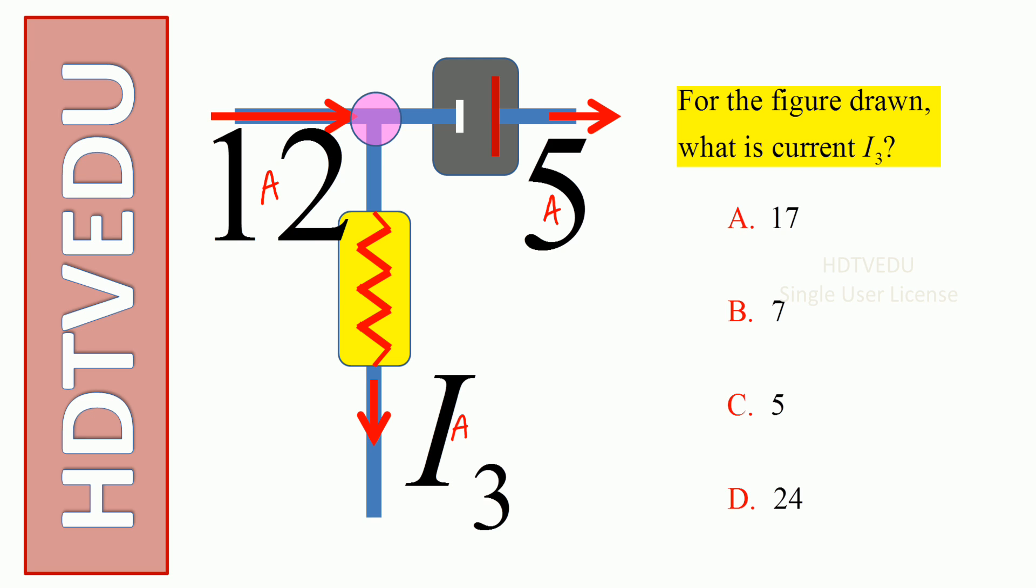So 12 enters, 5 and I₃ leaves. Question is, what is current I₃? Is it 17, is it 7, is it 5, is it 24?